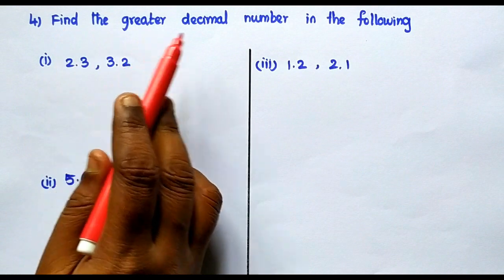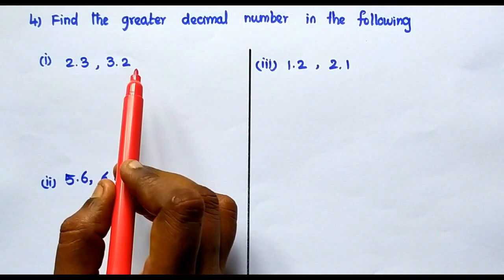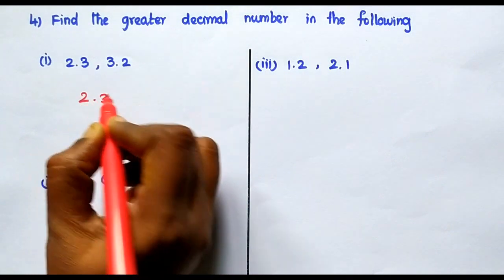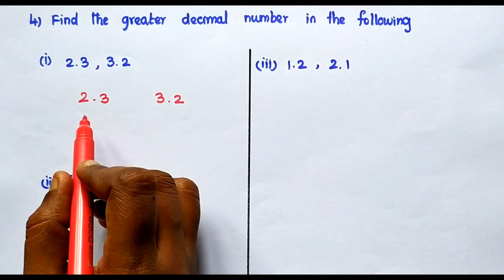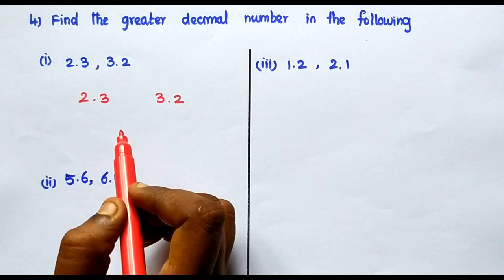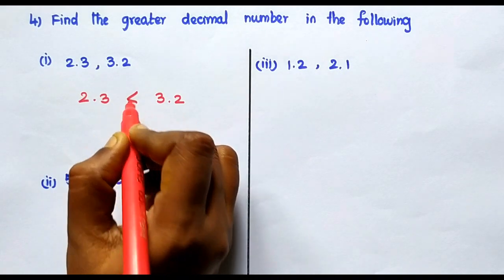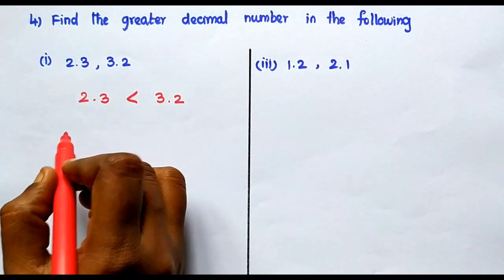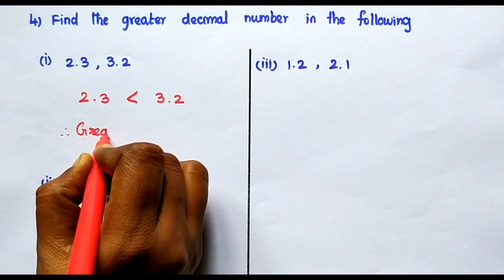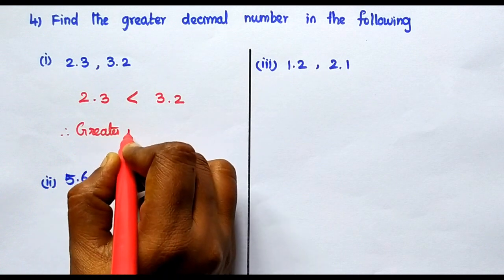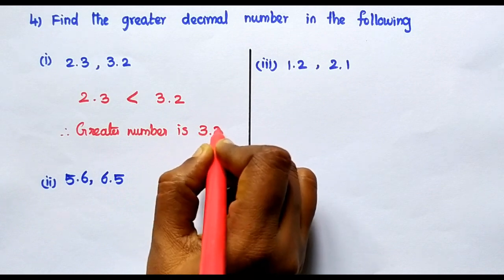Fourth sum: Find the greater decimal number in the following. First pair: 2.3 and 3.2. Compare the whole number parts — here 2, here 3. Which one is greater? 3. So 3.2 is greater than 2.3. The greater number is 3.2.